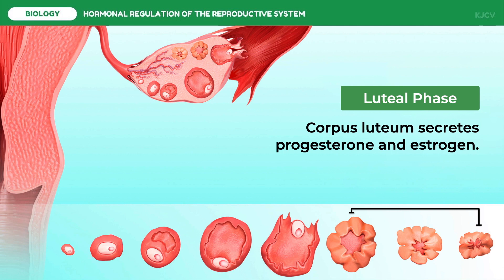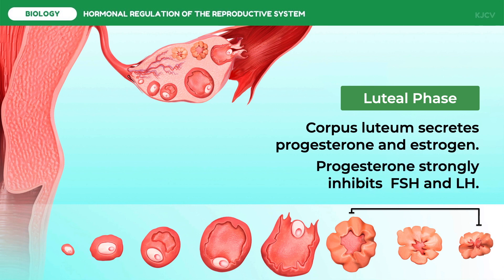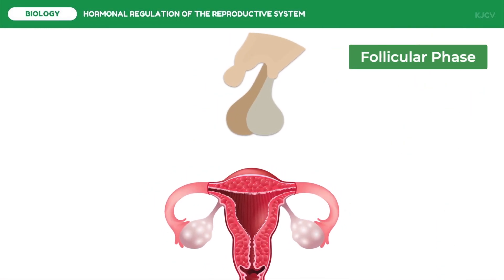Estrogen secretion in the follicular phase followed by progesterone secretion in the luteal phase is essential for preparing the uterus for implantation of a fertilized ovum. Also, progesterone strongly inhibits FSH and LH. Let us closely look at the hormonal interactions that regulate ovulation and menstruation in women. The follicular stage is the start of the ovarian cycle, and it happens alongside the menstrual phase of the uterine cycle, which exhibits significantly low levels of estrogen and progesterone.